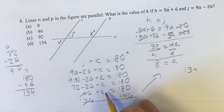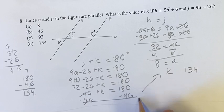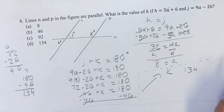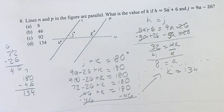And these 46s will cancel, and we just have k on this side. I just want to separate that from the calculations for a. We're left with k is equal to 134.